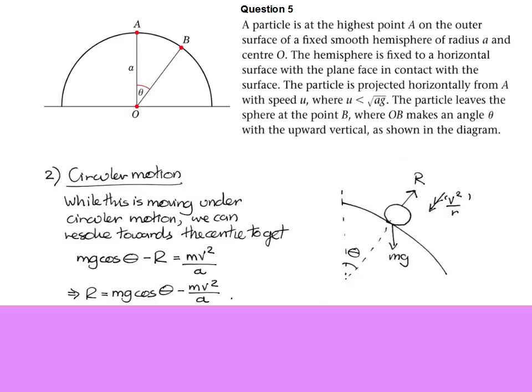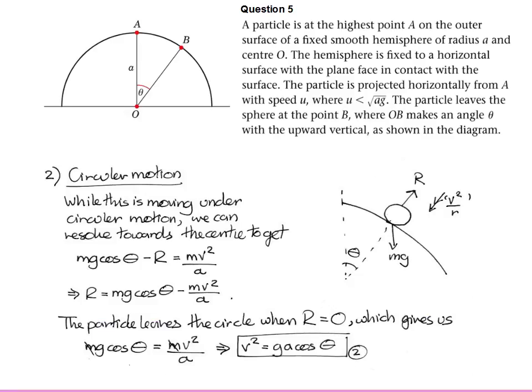So what we get there is an expression for the normal reaction. And we want to try and figure out the point B, and the point B is where it leaves the sphere. It's going to leave the sphere when the reaction becomes zero. You can't have a normal reaction of less than zero. It's not sucking you into the sphere. So what we need to do now is set the normal reaction equal to zero, and see what expression we get. And very nicely, what happens there is we actually get an expression for how fast it's going when it leaves the sphere. Because when we equate everything, all the m's cancel out, and we end up that the speed it's going when it leaves the sphere is ga cos theta. So at this point we need to think about the two different expressions for v squared we've got, and what happens when we equate them.